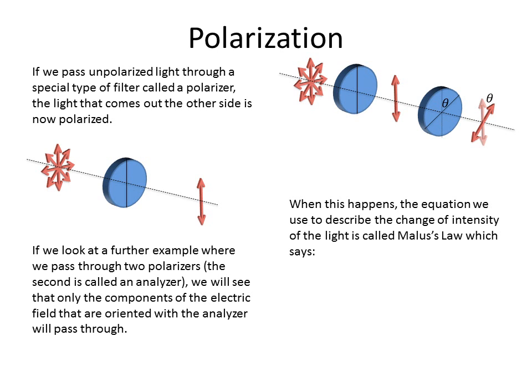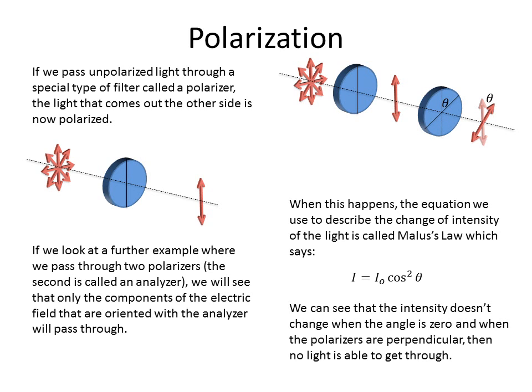And there's a wonderful law called Malus's Law which says that the intensity of the light that comes out, I, is equal to the intensity that goes in times the cosine squared of the angle between the polarization in and the new polarization out. It's a pretty simple law.